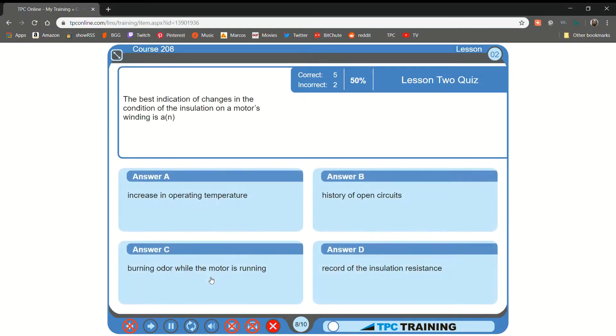The best indication of changes in the condition of the insulation on a motor's winding is A. An increase in operating temperature. B. A history of open circuits. C. A burning odor while the motor is running. D. A record of the insulation resistance. A. That is correct.